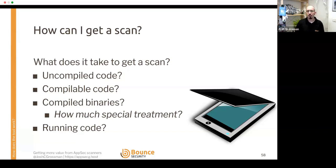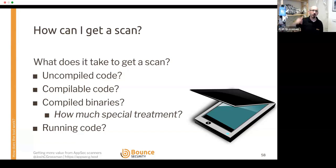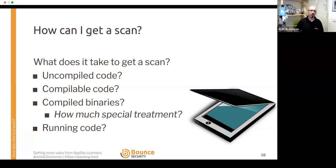If you have to compile the code to scan it, does it need special treatment? Do you need to keep debug symbols? You may need to set up a parallel pipeline that compiles the code in a special way for the scanner, while the main pipeline goes to production. It's important to consider what you actually need in order to perform this scan.